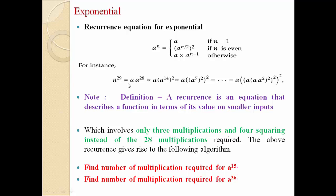But we are finding the solution of a raised to 29 using this recurrence equation. When n is equal to 1, we return a. When n is even, we return a raised to n by 2 whole raised to 2. Otherwise, we return a into a raised to n minus 1. Here n is equal to 29, so the first condition is false, the second condition (n is even) is also false, and the third condition (otherwise) is true. So in place of a raised to 29, we can write a into a raised to 28.